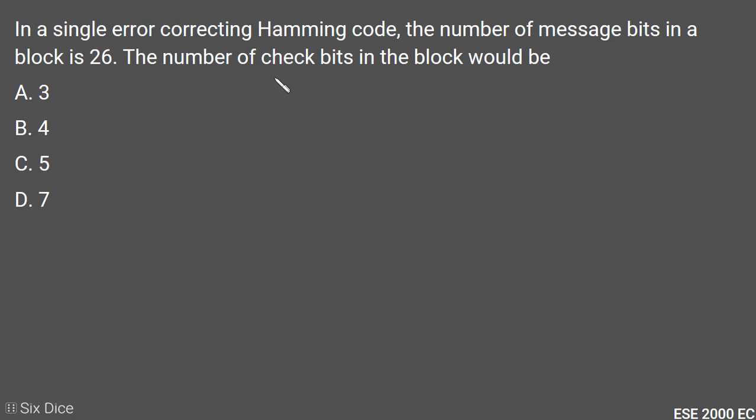To find the number of check bits or parity bits for Hamming code, we have a formula: 2 to the power p should be greater than or equal to p plus m minus 1, where p is the number of parity bits. The value of p should be minimum.